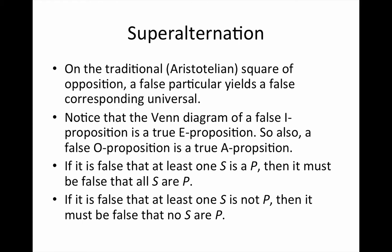Moreover, it is only when the particular claim is false that its corresponding universal is necessarily also false. So if it is false that at least one S is a P, then it must be false that all S are P. Similarly, if it is false that at least one S is not P, it is false that no S are P.